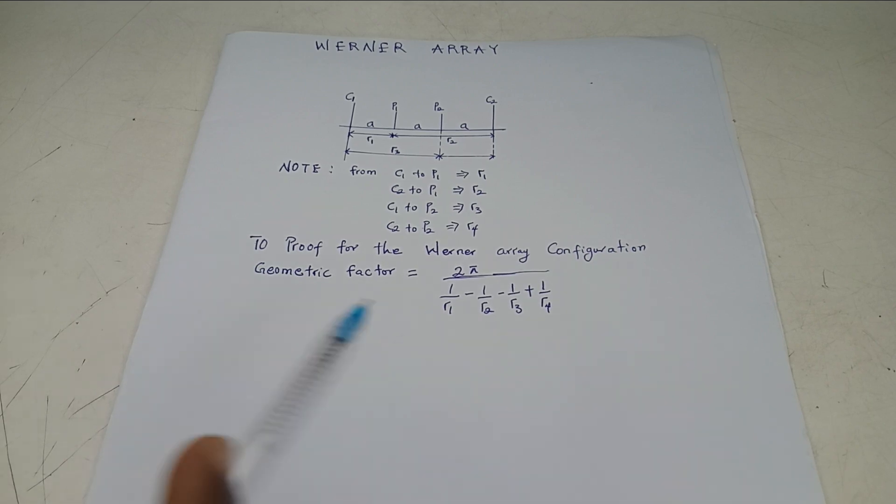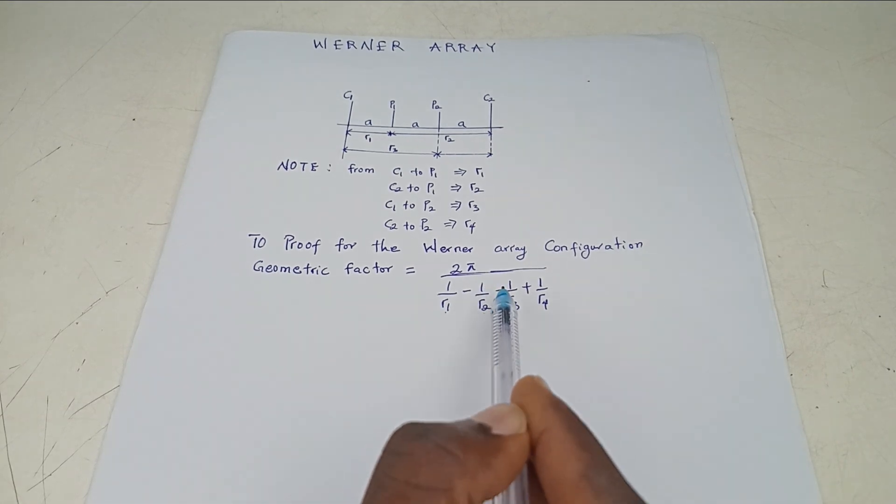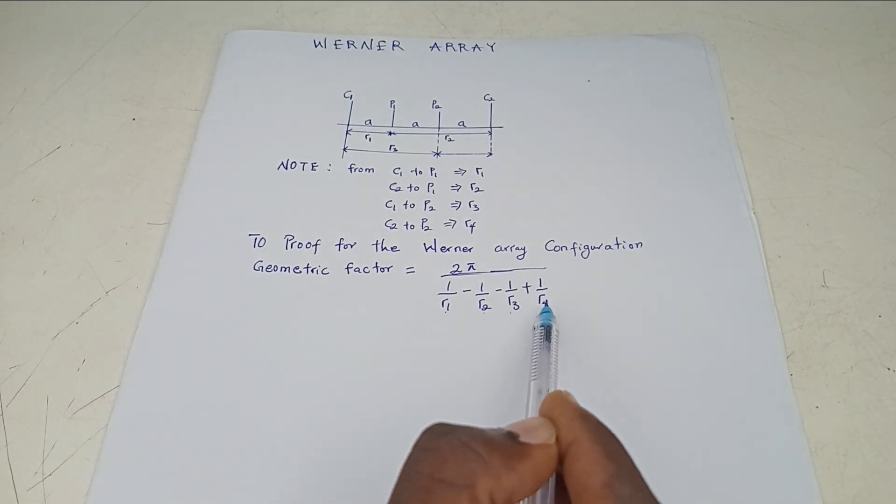So a geometric factor has the formula 2π over 1 over R1 minus 1 over R2 minus 1 over R3 plus 1 over R4.